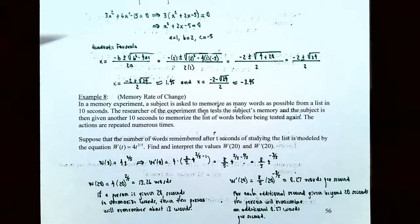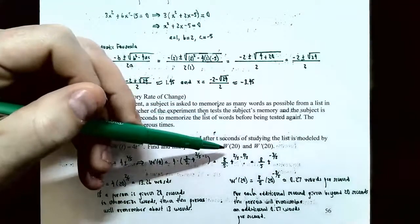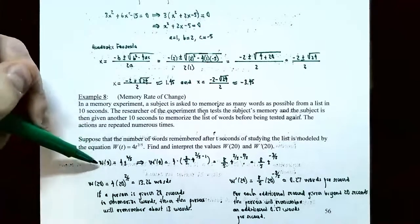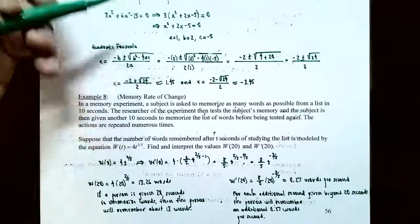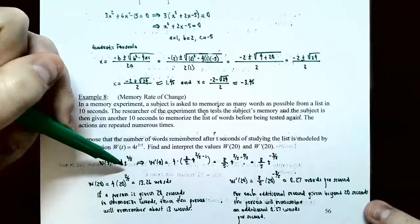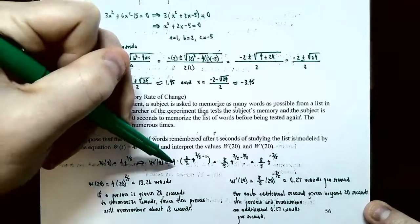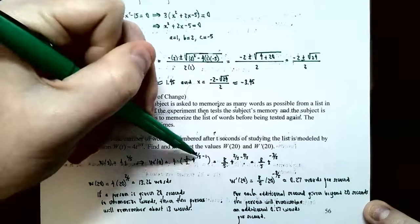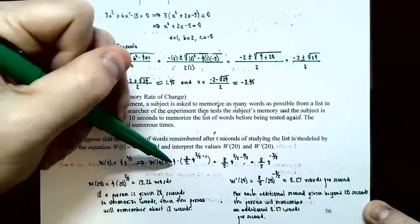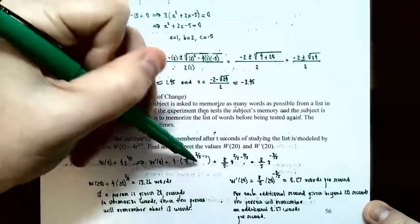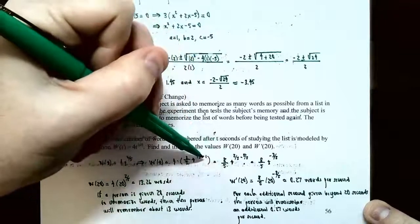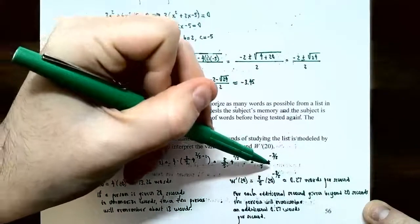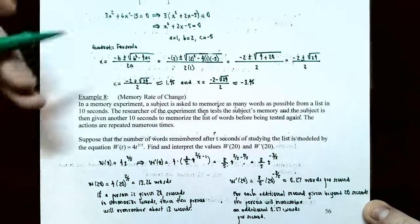We need to find and interpret w of 20 and w prime of 20. First, calculate the derivative. Since w of t is 4 times t to the 2/5, keep the constant 4 and use the power rule: bring 2/5 down as a coefficient, giving 4 times 2/5 equals 8/5, and subtract 1 from the exponent: 2/5 minus 5/5 equals negative 3/5. So w prime of t equals 8/5 times t to the negative 3/5.